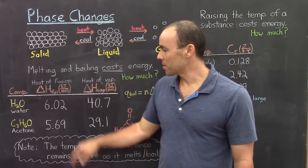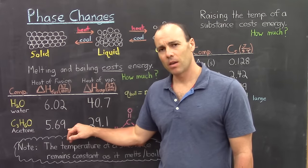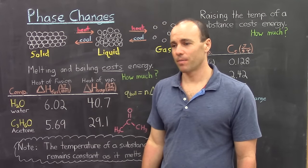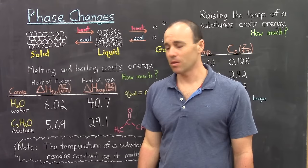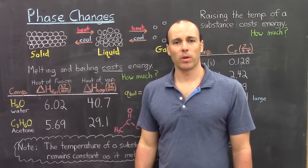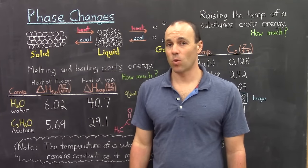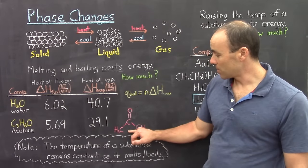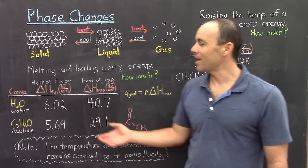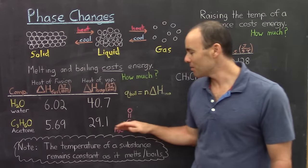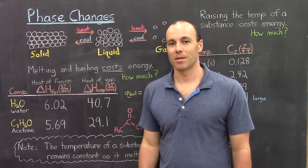We can compare water's heats of fusion and vaporization with those of acetone, and acetone's values are quite a bit less than water's: it only costs 5.69 kilojoules per mole to melt acetone, and only 29.1 to boil it. If you look at the structure of acetone, you can see why — although it does have a permanent dipole, it does not hydrogen bond like water does. The interactions in acetone are not as strong as in water, so it shouldn't cost as much energy to melt and boil acetone.